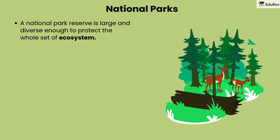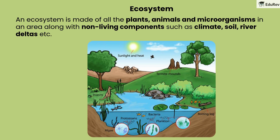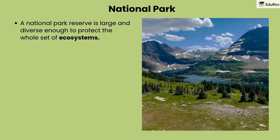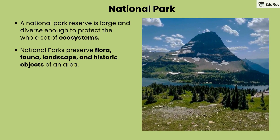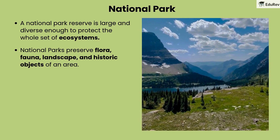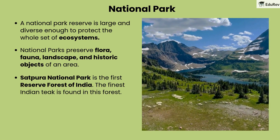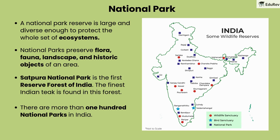A national park reserve is large and diverse enough to protect a whole set of ecosystems. An ecosystem is made of all the plants, animals, and microorganisms in an area, along with non-living components such as climate, soil, river deltas, etc. National parks preserve flora, fauna, landscape, and even historic objects of an area. Satpura National Park is the first reserve forest of India, and the finest Indian teak is found there. There are more than 100 national parks in India; some examples include Rajaji National Park and Jim Corbett National Park.